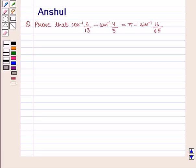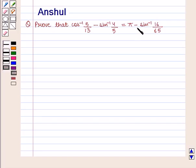Hello and welcome to the session. In this session, we are going to discuss the following question which says: Prove that cos⁻¹(5/13) minus sin⁻¹(4/5) is equal to π minus sin⁻¹(16/65).